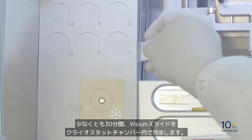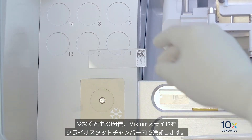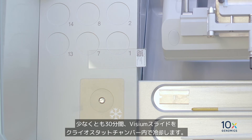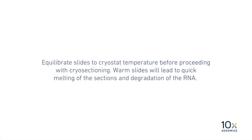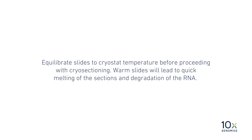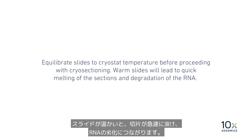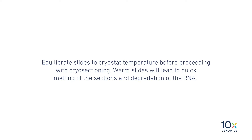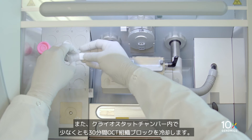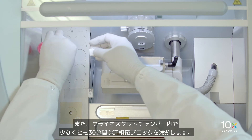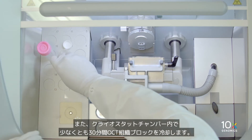We have the Visium slides, which have been cooled down to the cryostat chamber temperature for at least 30 minutes. Equilibrate slides to cryostat temperature before proceeding with cryo sectioning. Warm slides will lead to quick melting of the sections and degradation of the RNA.